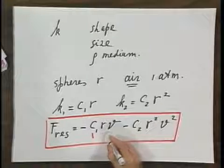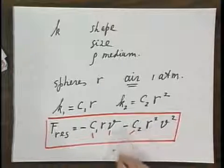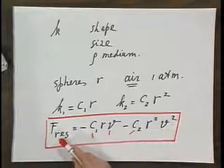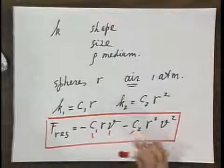And when C1 and V and C2 are positive, the minus signs clearly indicate that the resistive force is opposing the direction of the velocity.